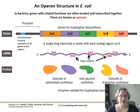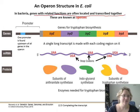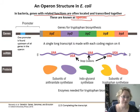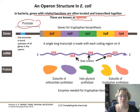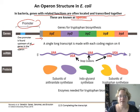The other cool thing that bacteria do is genes with related functions are often located together and transcribed together. You've heard of the lac operon. So you have one promoter upstream of all the genes in the operon, and here are five genes for tryptophan biosynthesis — they all just happen to be in one long pathway.